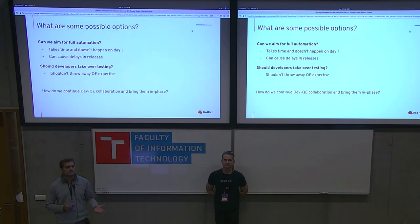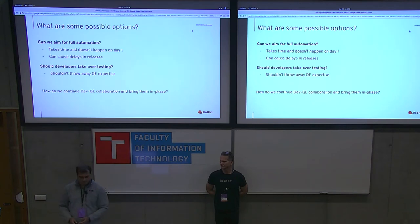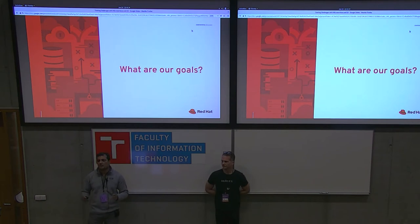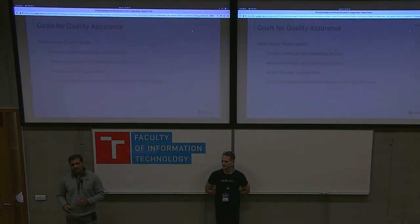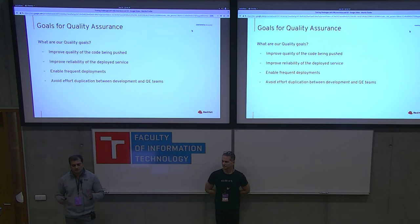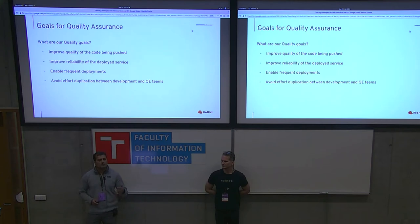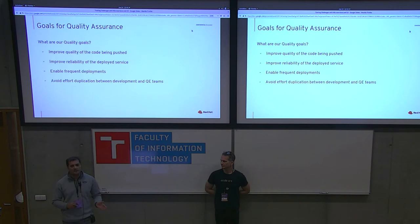When faced with this question, we took a step back and looked at the broader goals we had around quality assurance for our service. We came up with four high-level goals. One: improve the quality of the code being pushed. Two: improve the reliability of the service deployed in production at any given point in time. Three: enable frequent and faster deployments. And lastly: reduce effort duplication between development and QE teams.